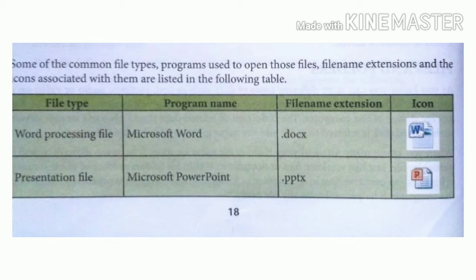Now we will discuss file icons and file name extensions. A file icon displays the name of the file and indicates the type of program required to open that file. So from the icon, we can tell which program is needed to open that file. In addition, a file name extension is associated with each file and consists of three or four letters that tell us what type of file it is.